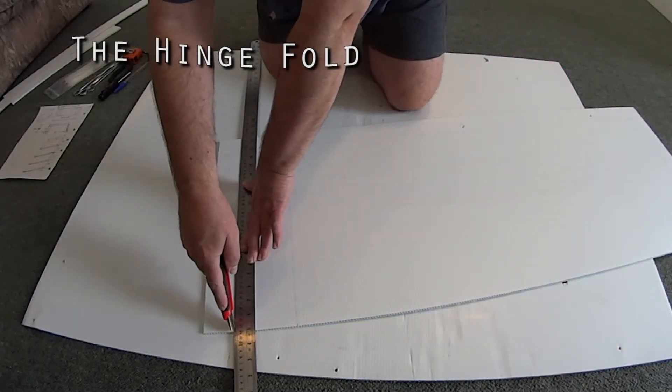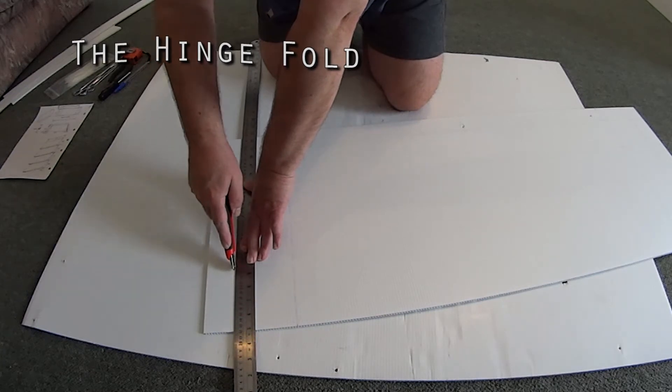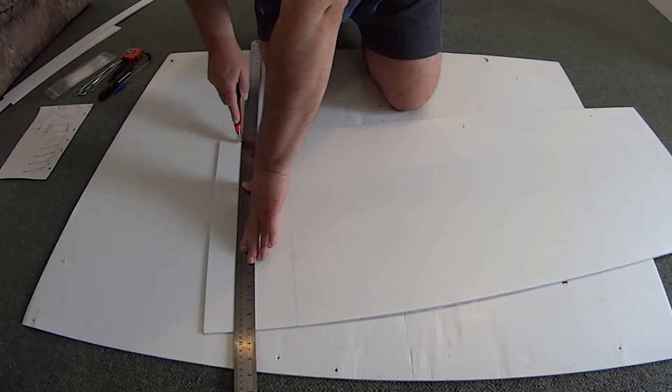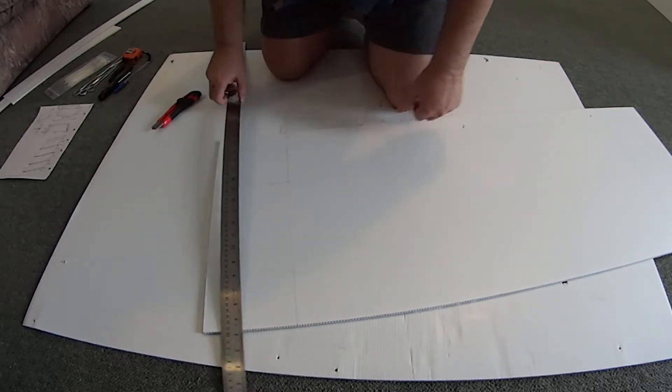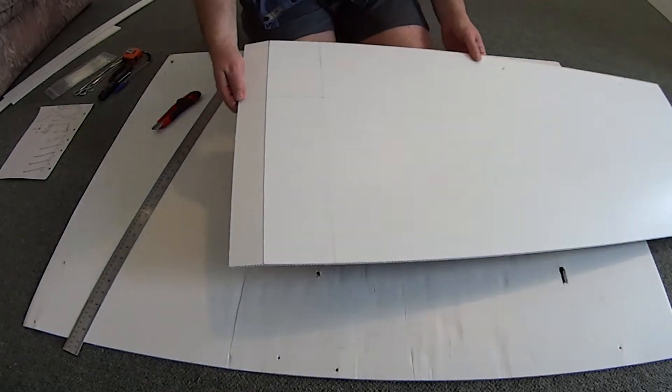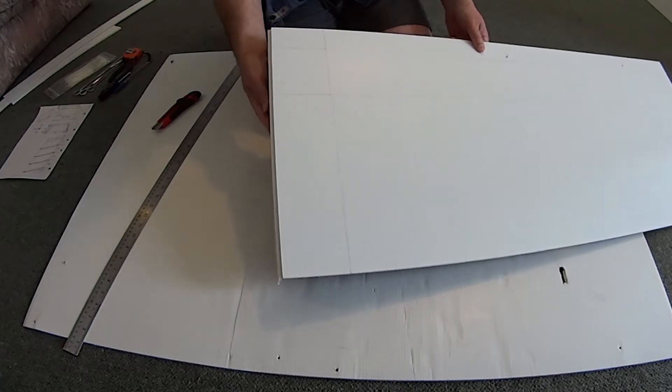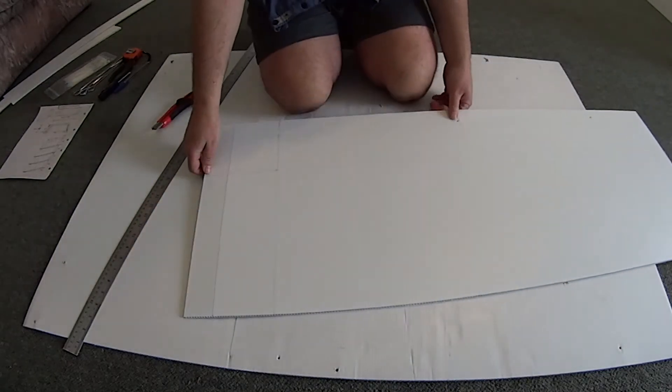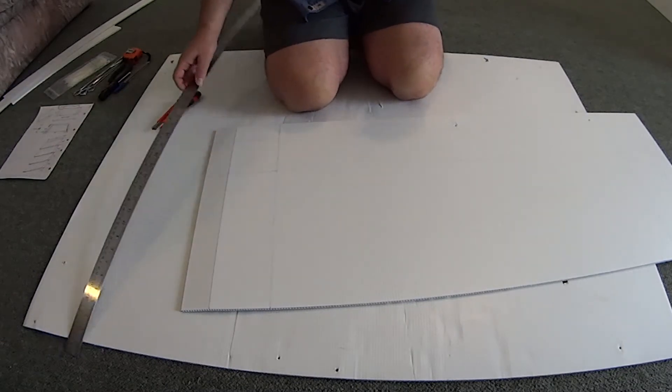The easiest fold starts with a cut. Paul Elkins calls this a hinge cut. That works for me. By extension, we can also call this a hinge fold. Because this fold involves cutting, please review my video on the basics of cutting corrugated plastic.